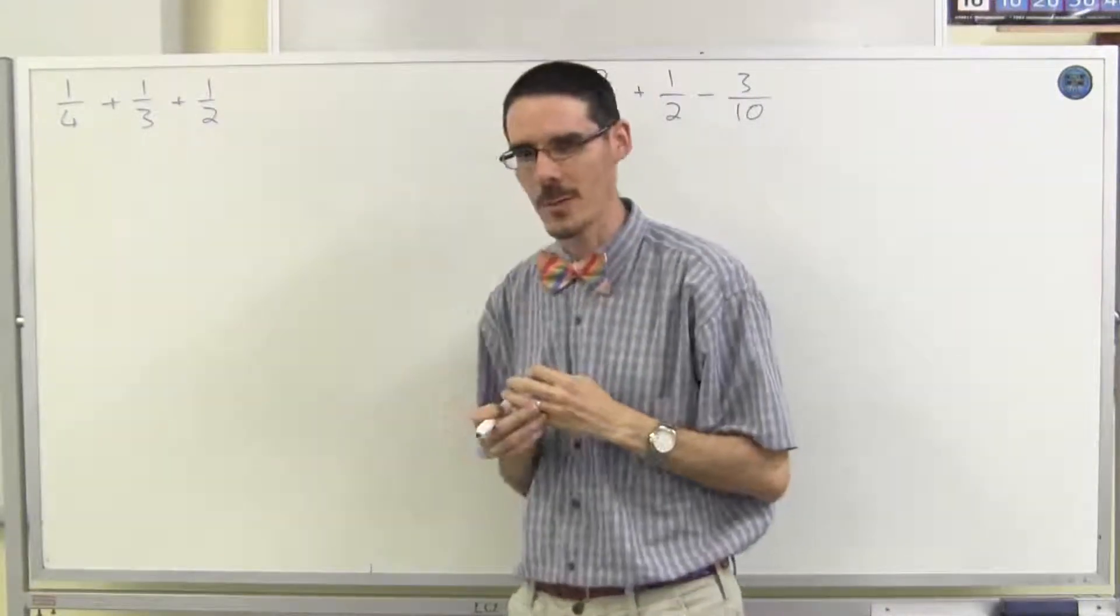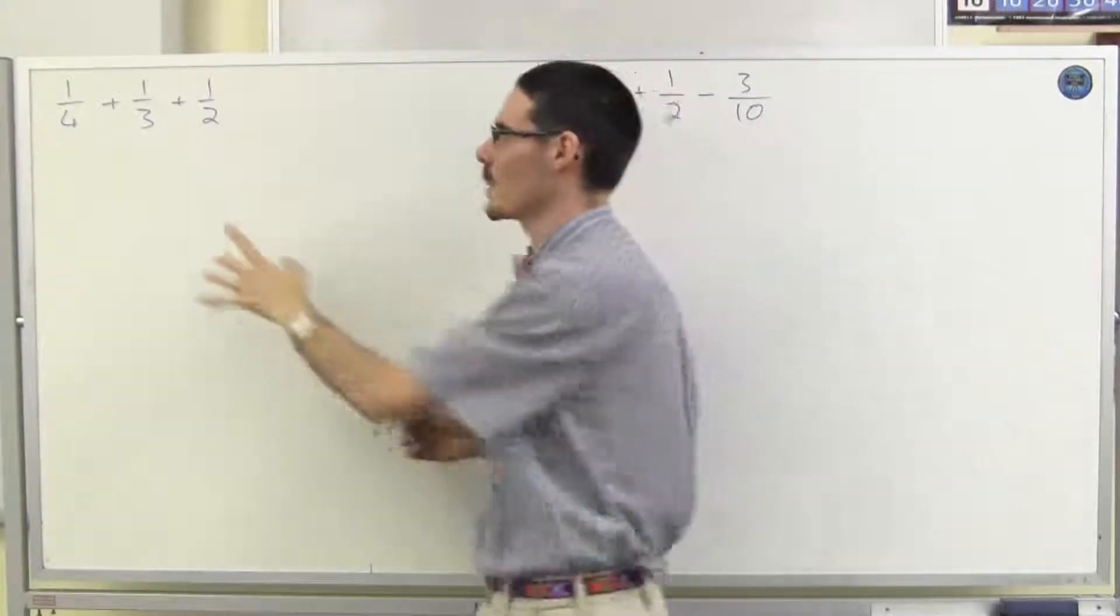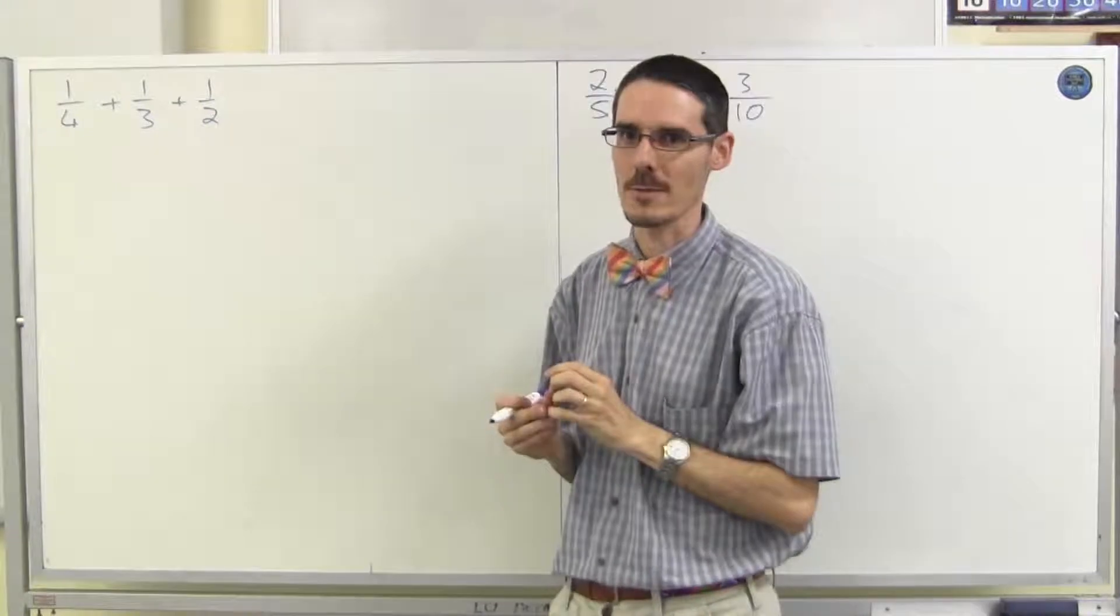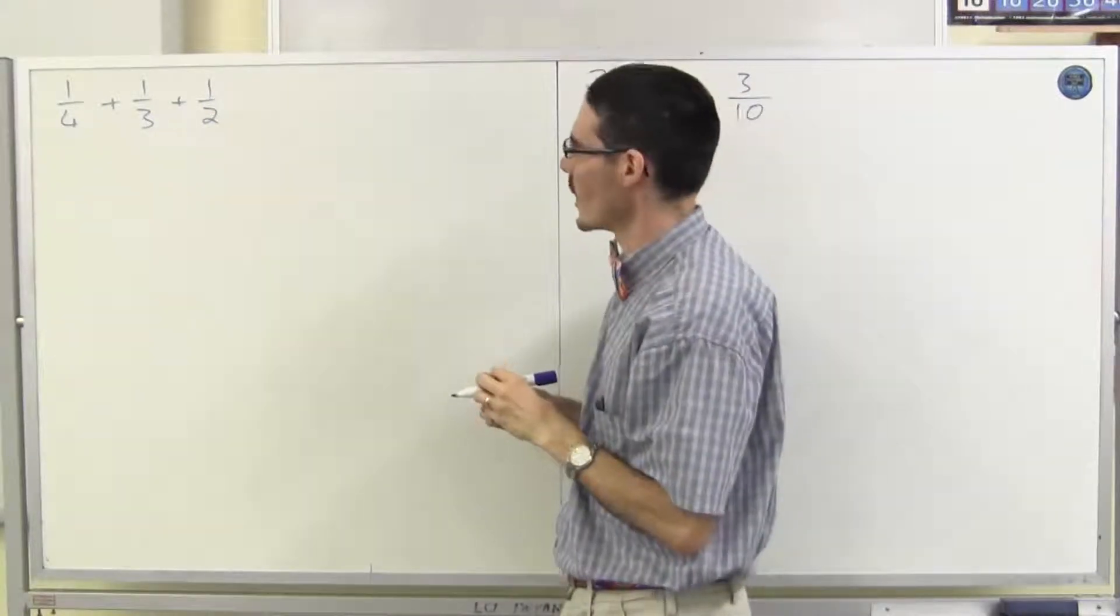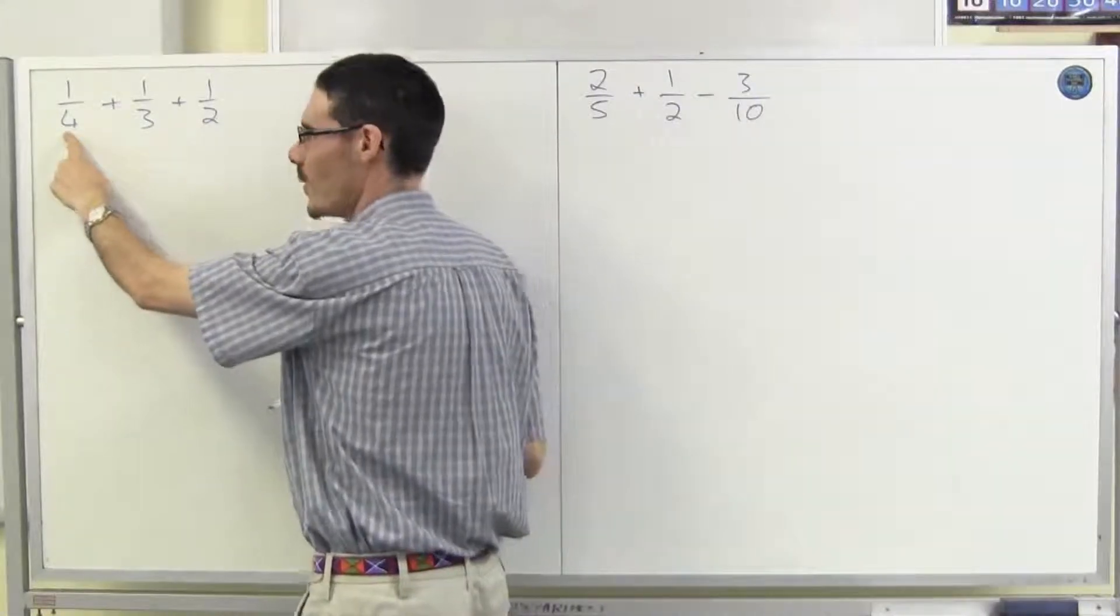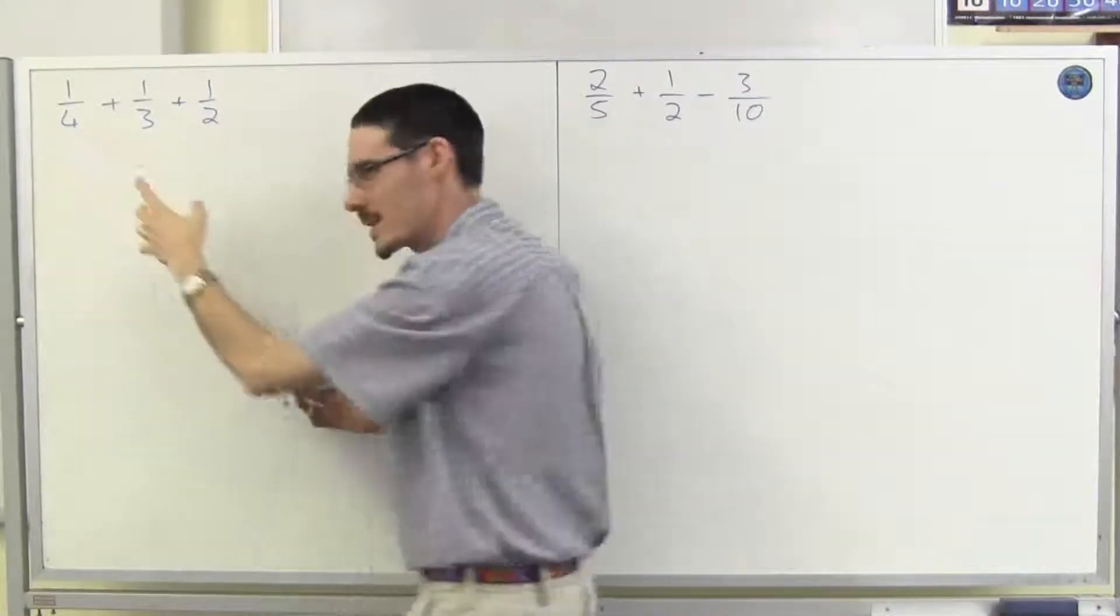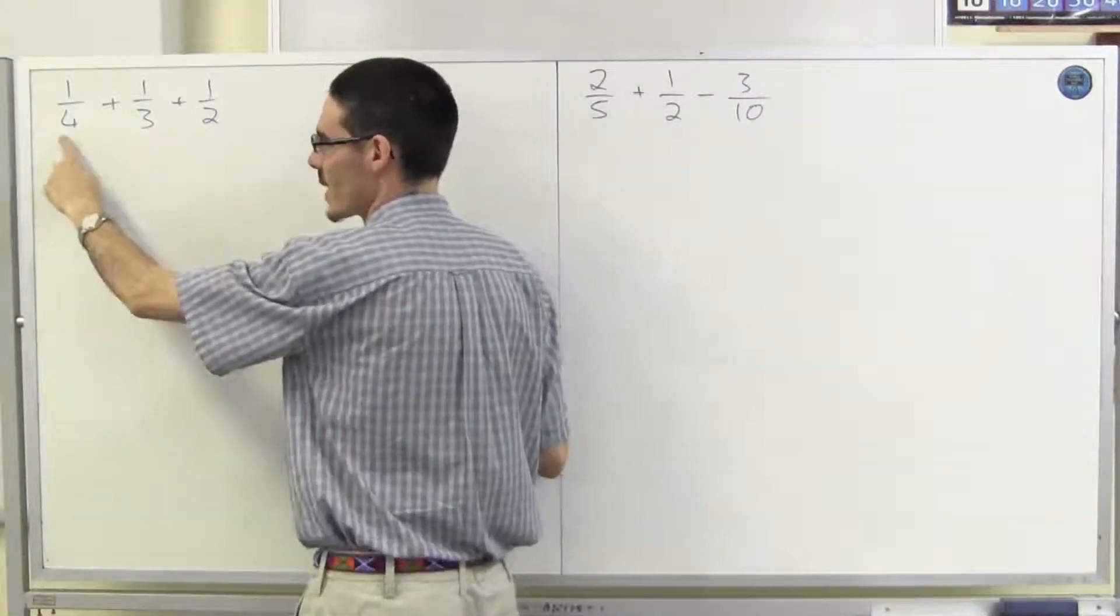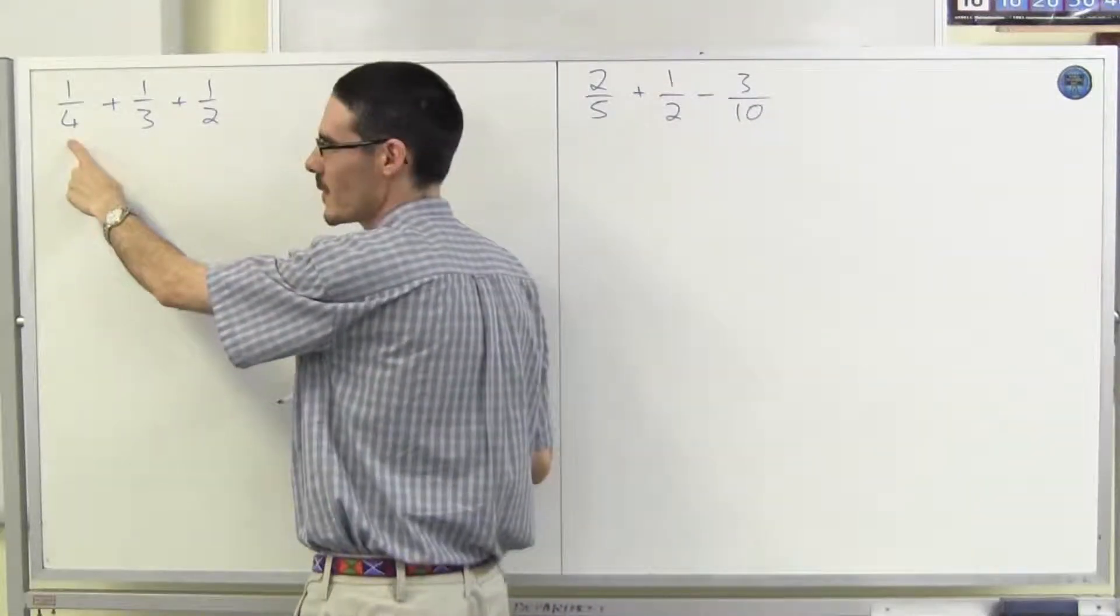What's the lowest common denominator? What's the smallest number that 4, 3, and 2 will all divide into? Well, let's try 4. Does 4 work? Notice it's the same technique, start with the bigger number. 3 doesn't go into 4 even though 2 does, so 4 is no good.